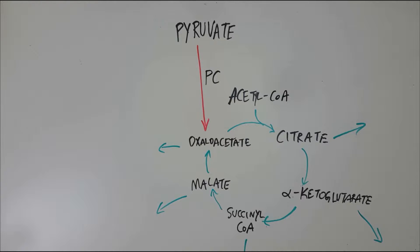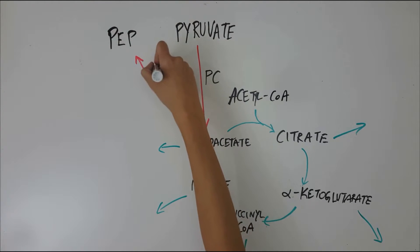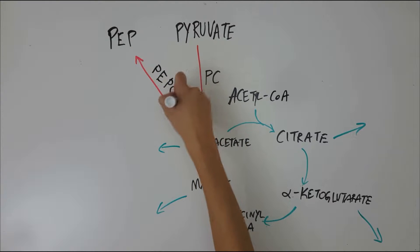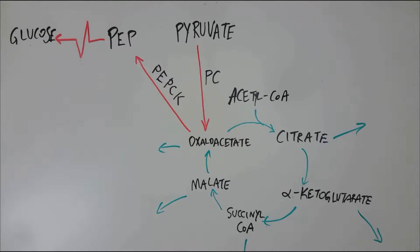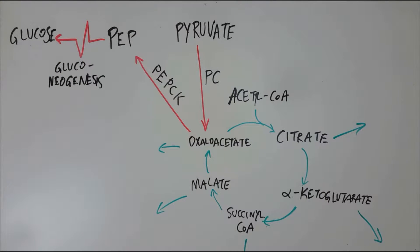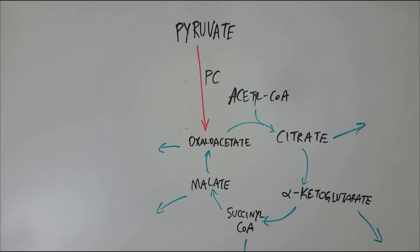In terms of gluconeogenesis, pyruvate is converted to oxaloacetate by pyruvate carboxylase. Oxaloacetate is then converted into phosphoenolpyruvate, catalyzed by phosphoenolpyruvate carboxykinase. The substrate then undergoes a series of catalysis reactions resulting in the production of glucose. Therefore, without pyruvate carboxylase, glucose cannot be synthesized from pyruvate or oxaloacetate.